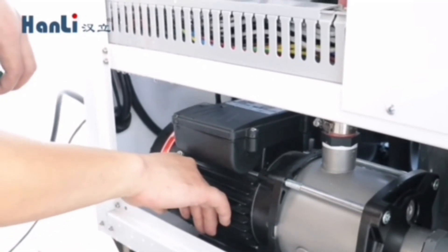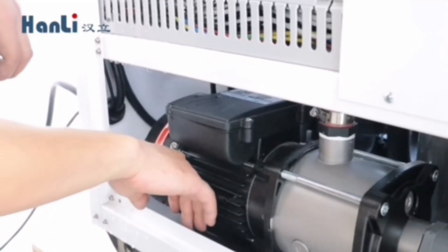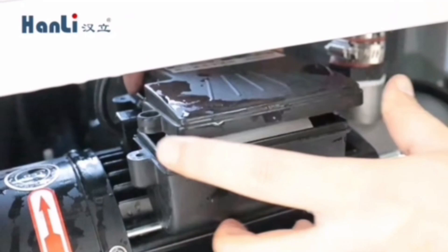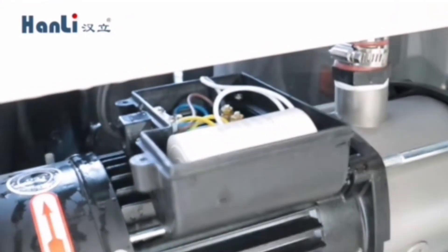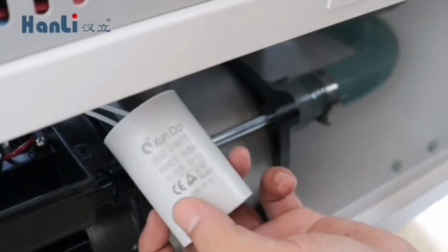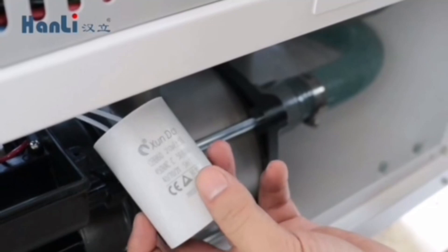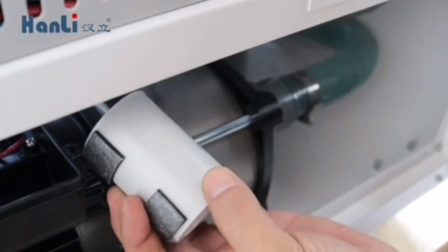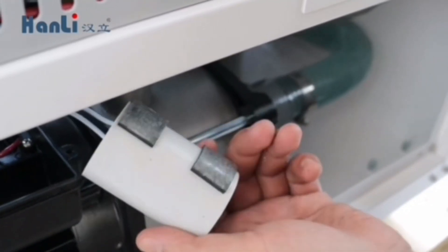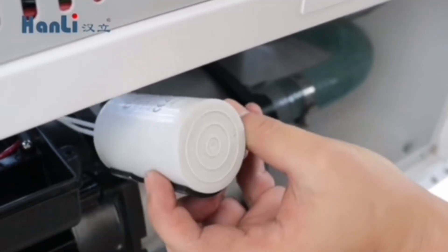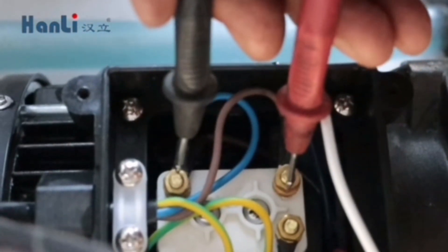If there is no vibration and wind blowing, you need to open the top cover of the water pump. Check whether the capacitor is deformed or bulging. If it's deformed, you need to replace a capacitor.